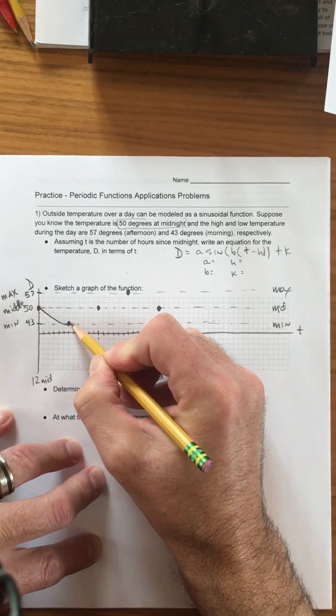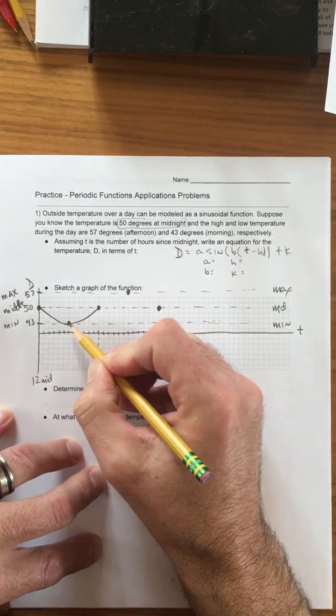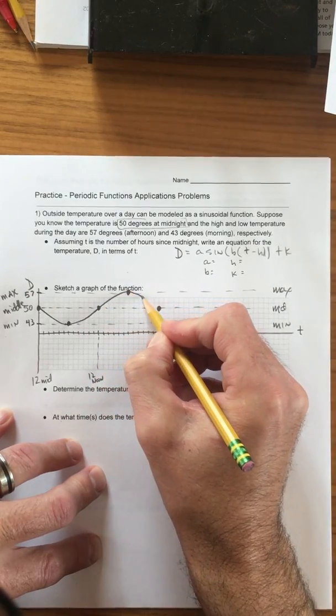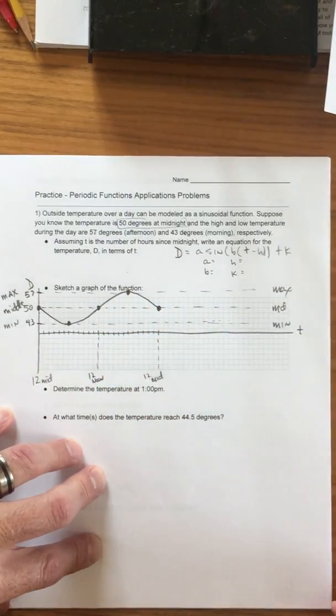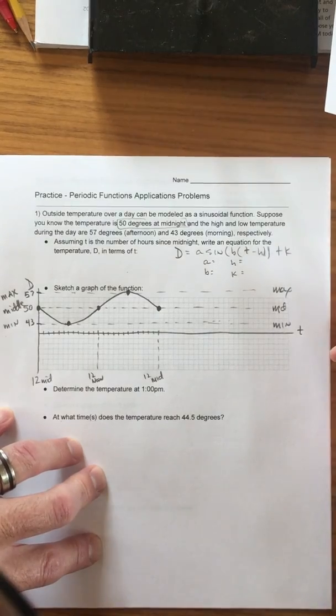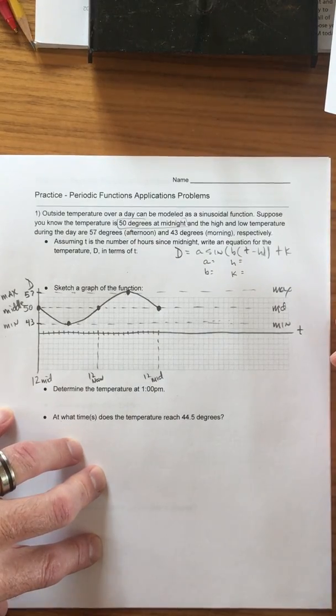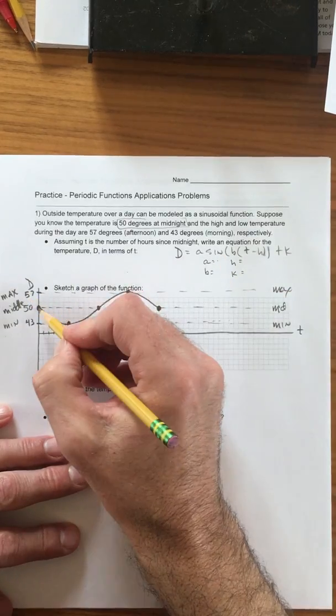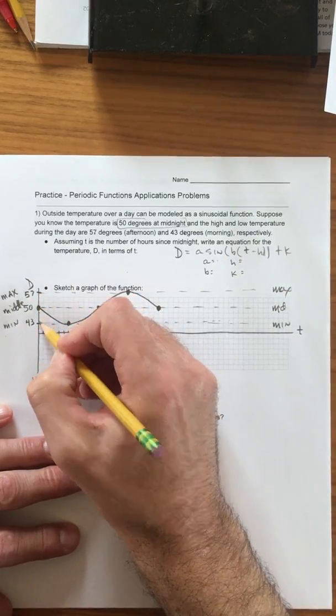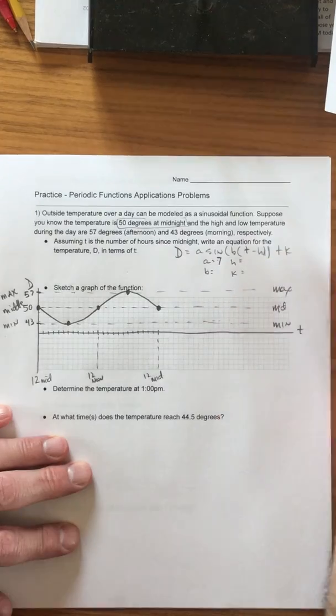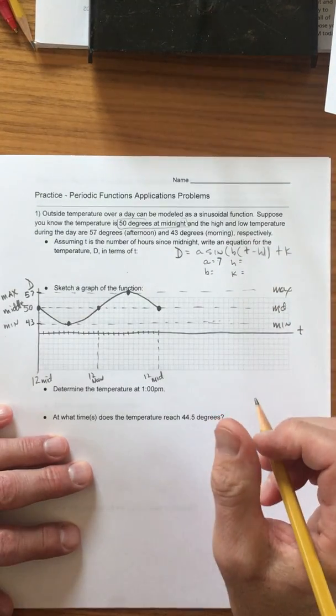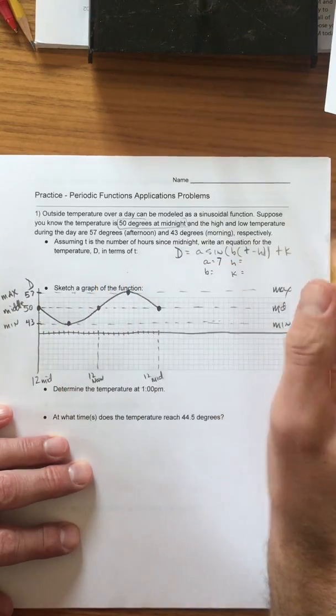And 43 degrees in the morning, so 1, 2, 3, 4, 5, 6. We're gonna assume with the symmetry and that information about the low temperature and a high temperature in the morning and the afternoon that the sine curve looks like the low temperature in the morning. The amplitude is the distance between the middle and the max or the middle and the min and that's seven.